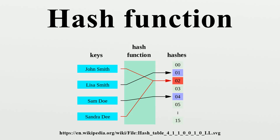In these applications, the set of all inputs is some sort of metric space, and the hashing function can be interpreted as a partition of that space into a grid of cells. The table is often an array with two or more indices, and the hash function returns an index tuple. This special case of hashing is known as geometric hashing or the grid method.